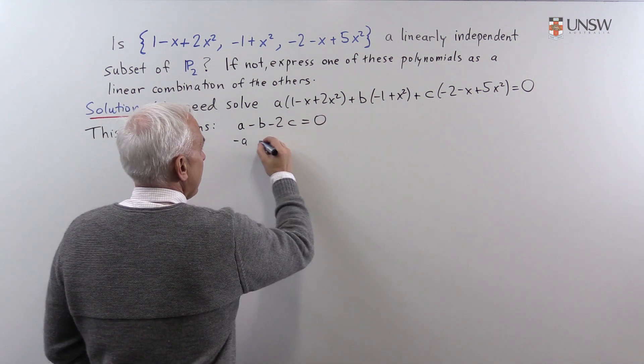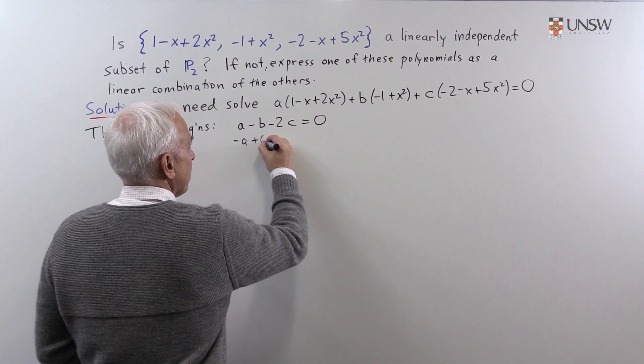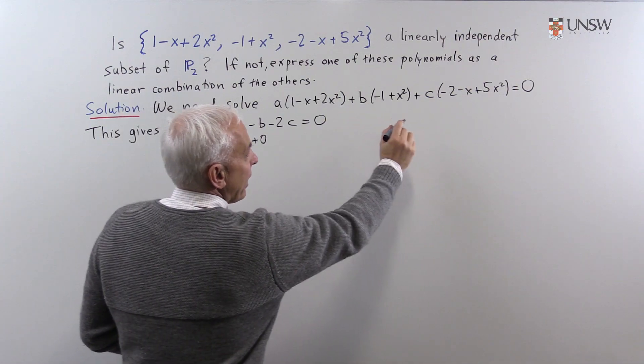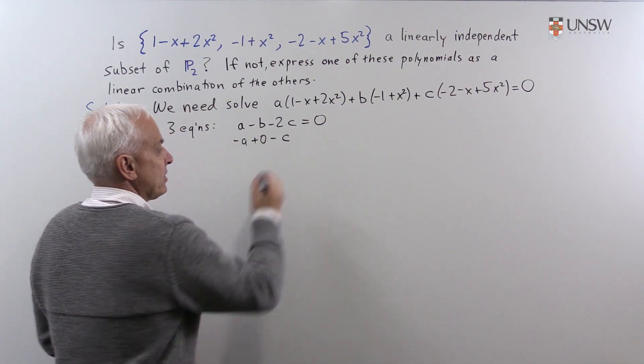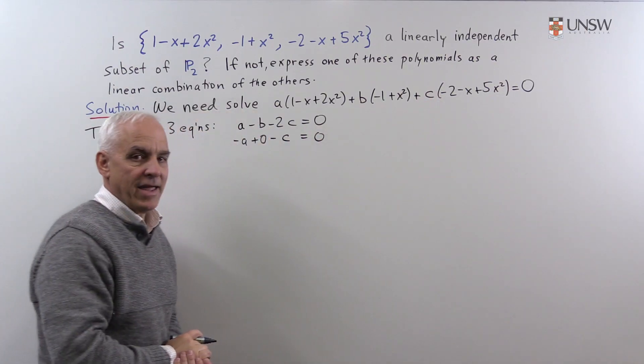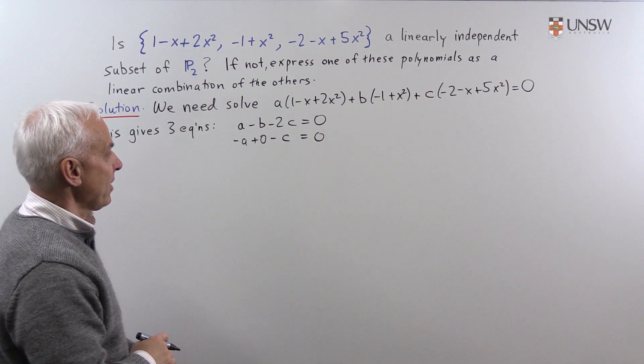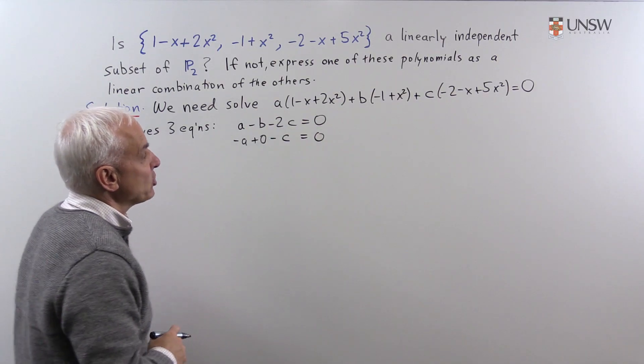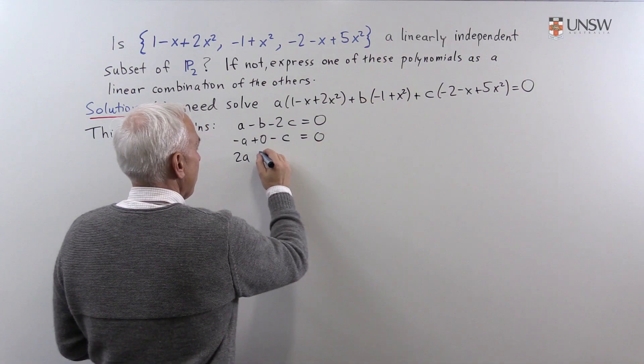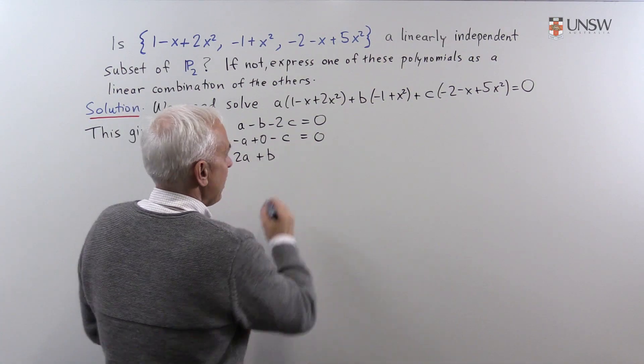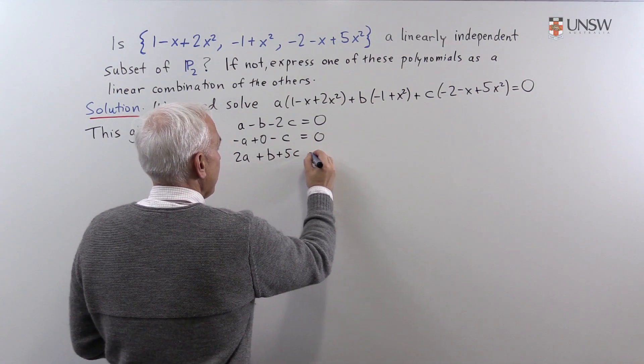is -a + 0b and -c times x should also equal 0, the coefficient of x on the right-hand side. And the coefficient of x² would be 2a plus b plus 5c equals 0.